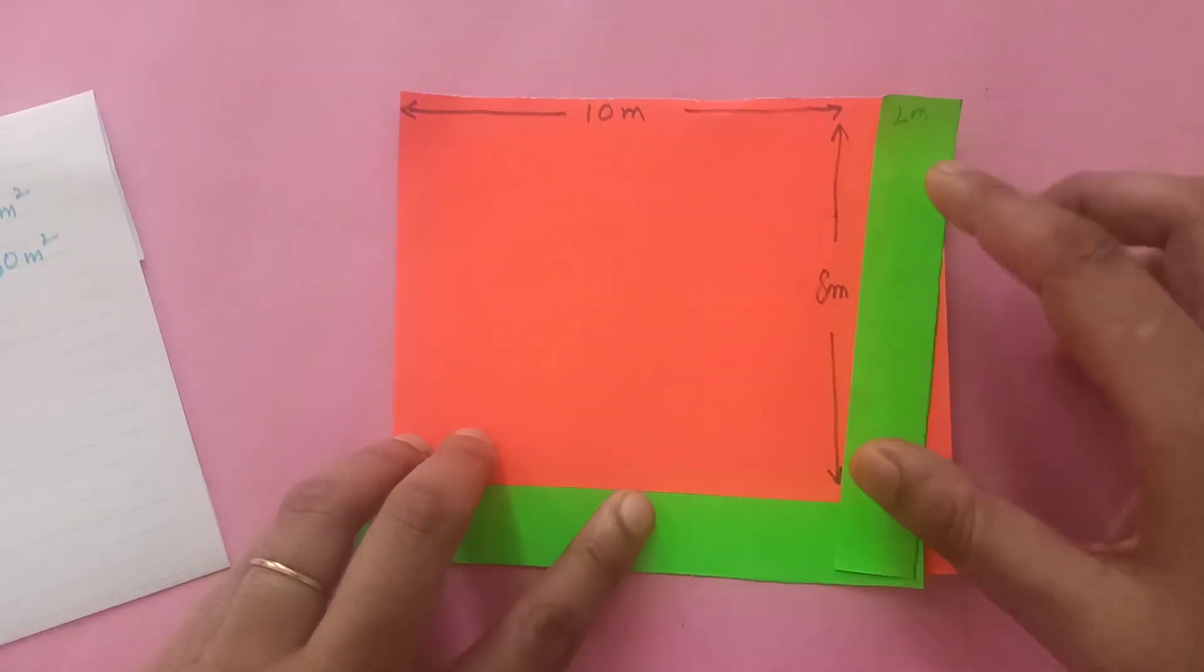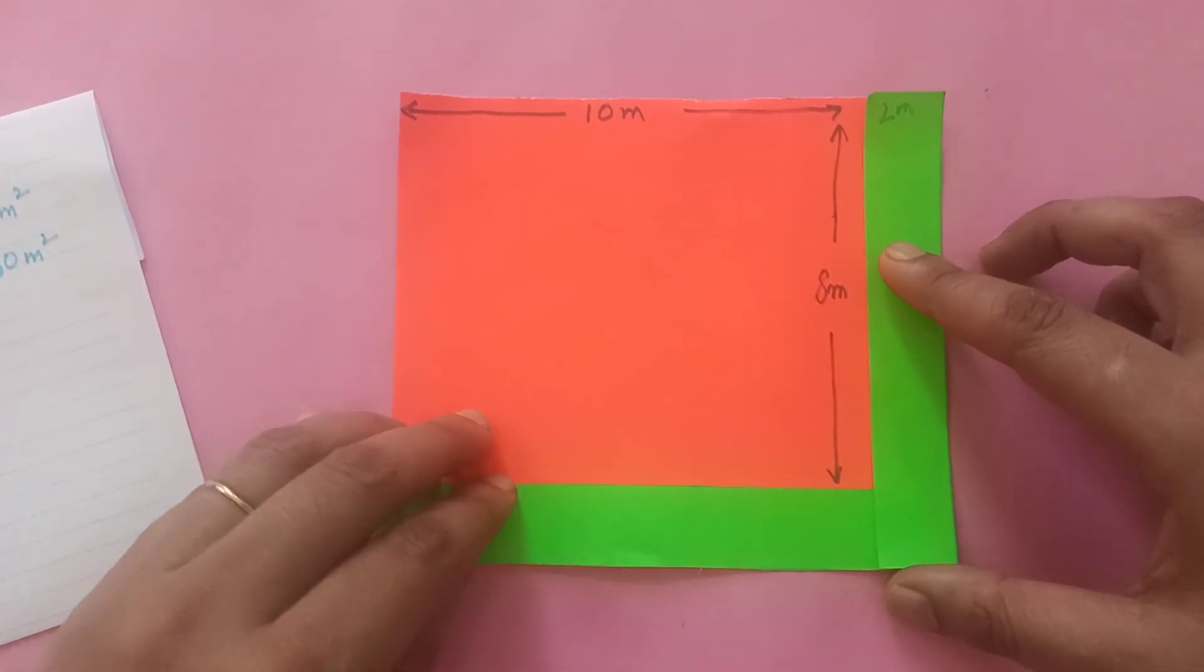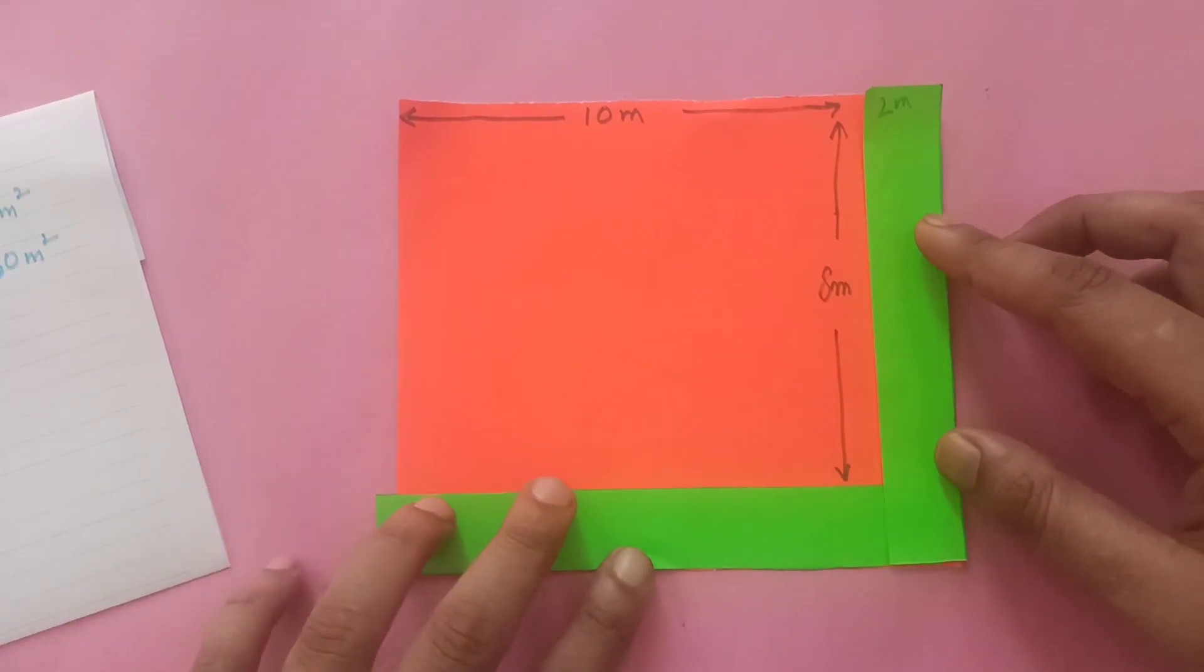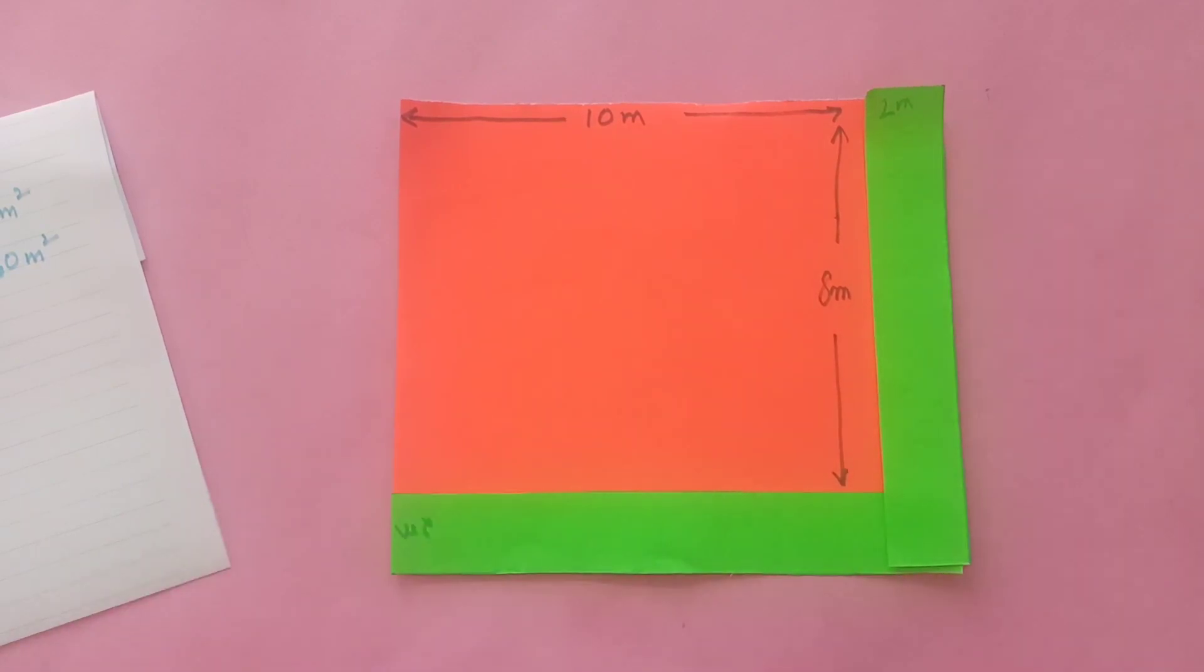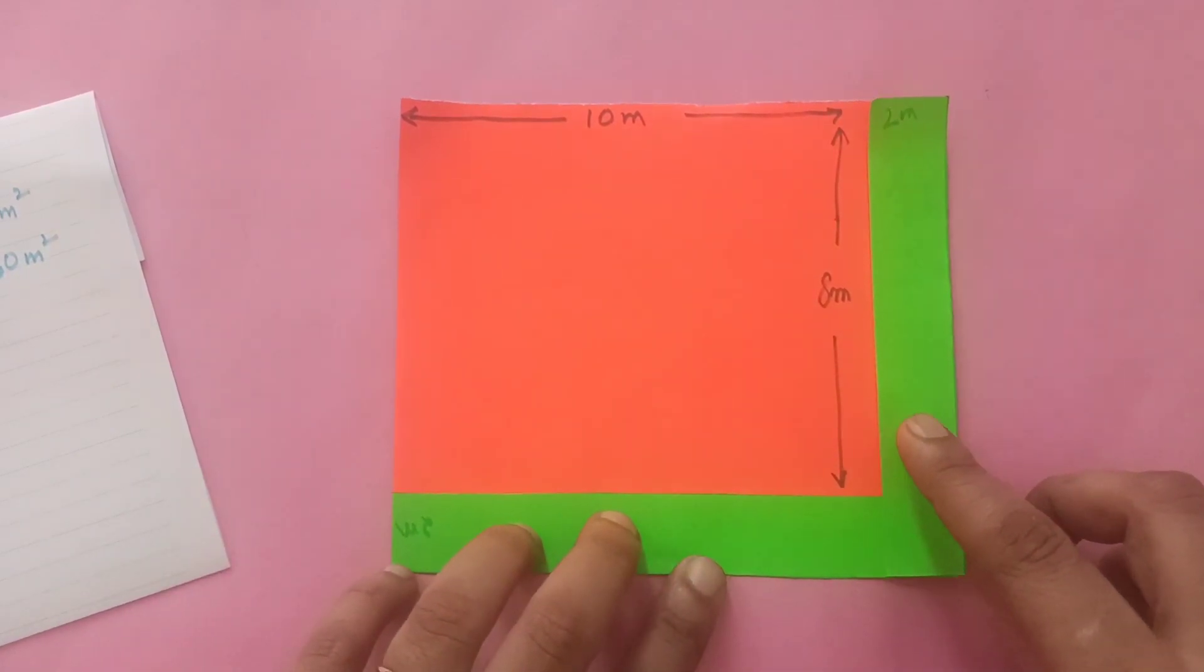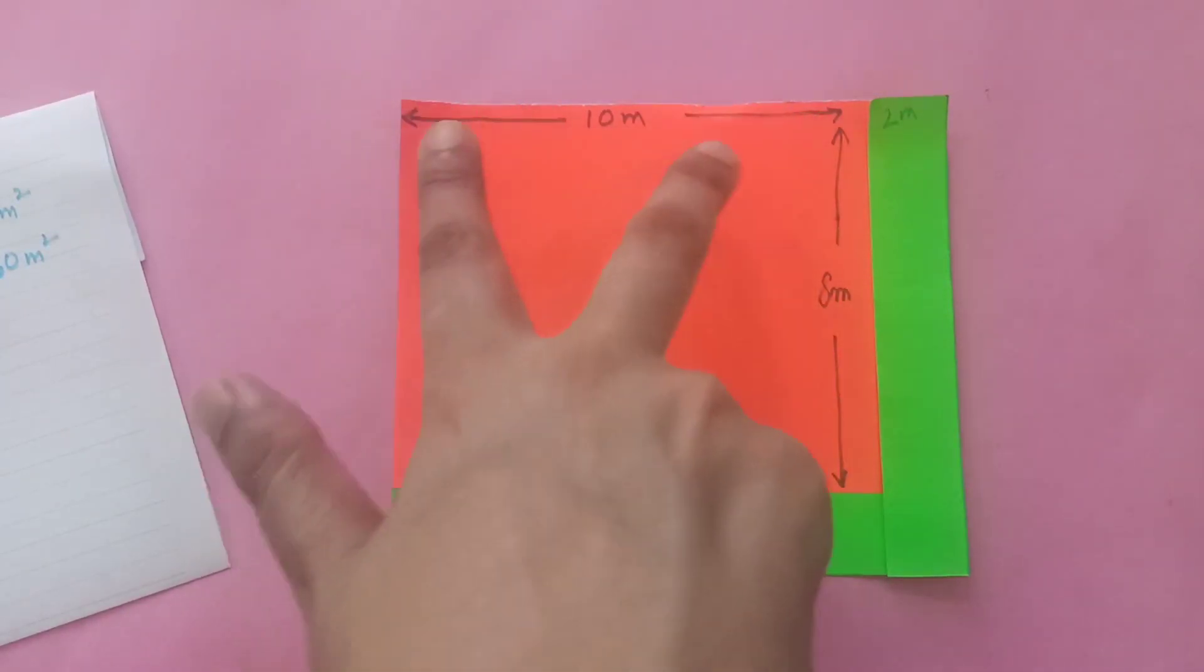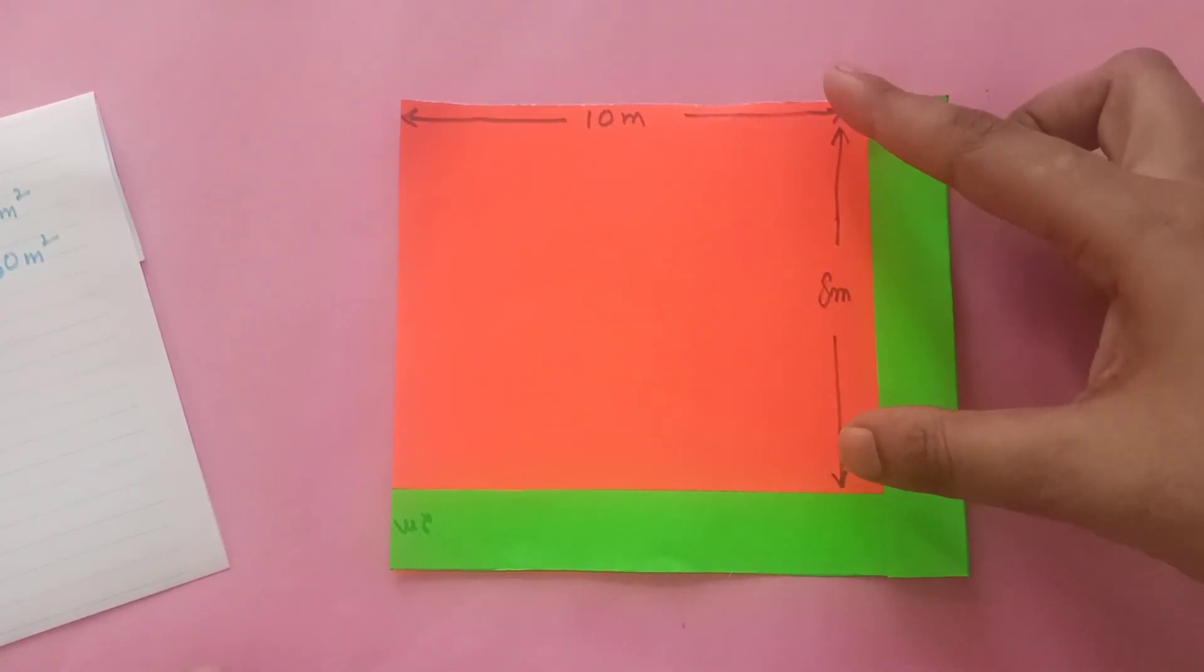Like this. And because of this, now we have a small red rectangle formed. The dimensions of this I have already written - because this was earlier 12, so this much is 10. 10 and 2 makes 12, so this is 10. This part, this side was 10, so this much is 8.